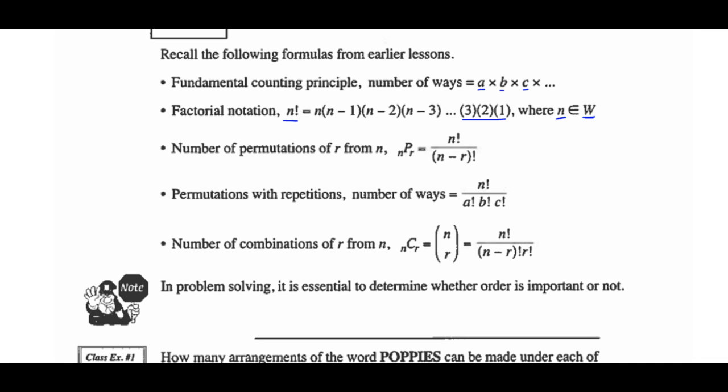The number of permutations of R objects taken from N at a time is: N permutations of R equals N factorial over (N minus R) factorial. That is on your formula sheet, so you don't have to memorize it — you do have to know how to use it.